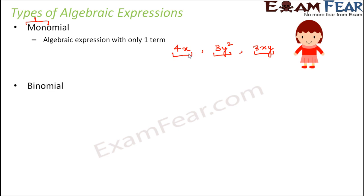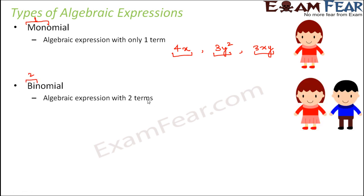The second type of algebraic expression would be a binomial. The term bi means two. So an algebraic expression with two terms. So again, let's take some examples. For example, x plus y is a binomial because it has two terms, x and y.